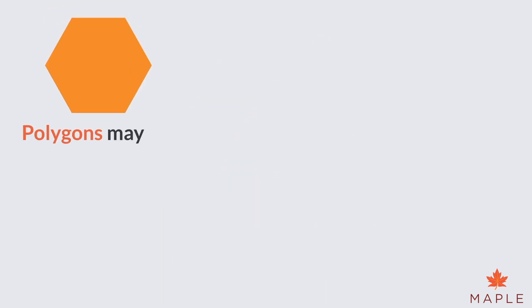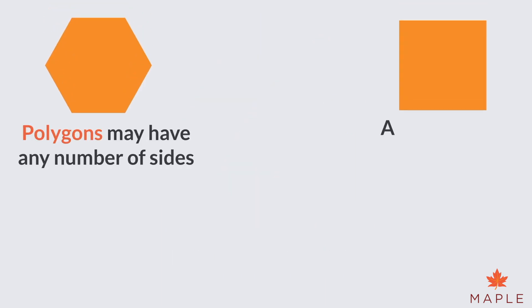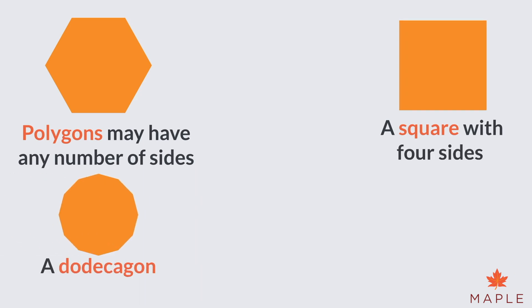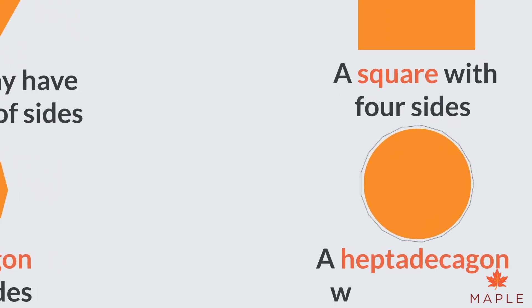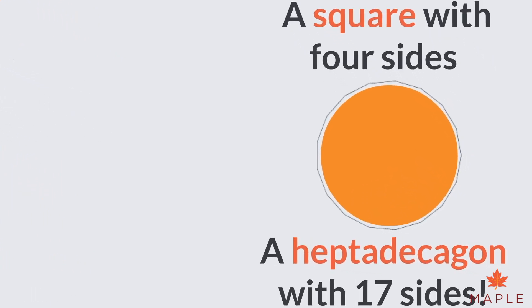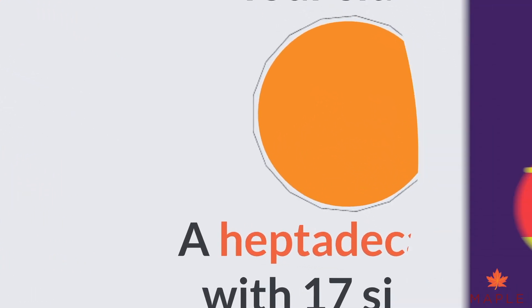Polygons may have any number of sides, whether that's a square with four sides, a dodecagon with 12 sides, or a heptadecagon with 17 sides.